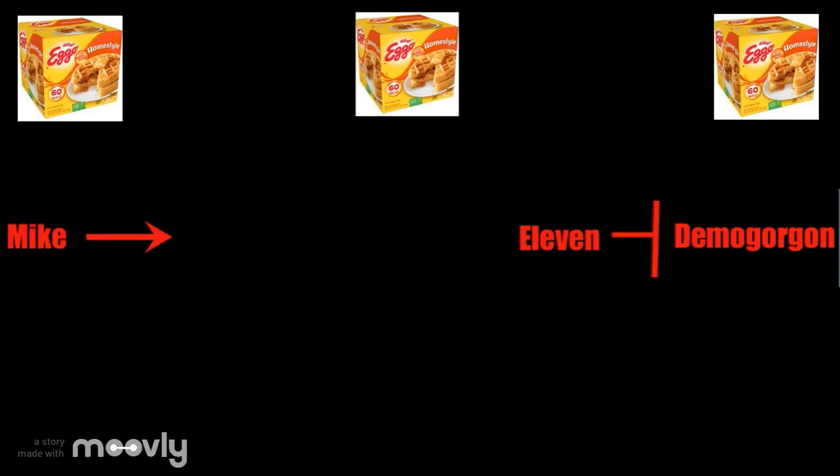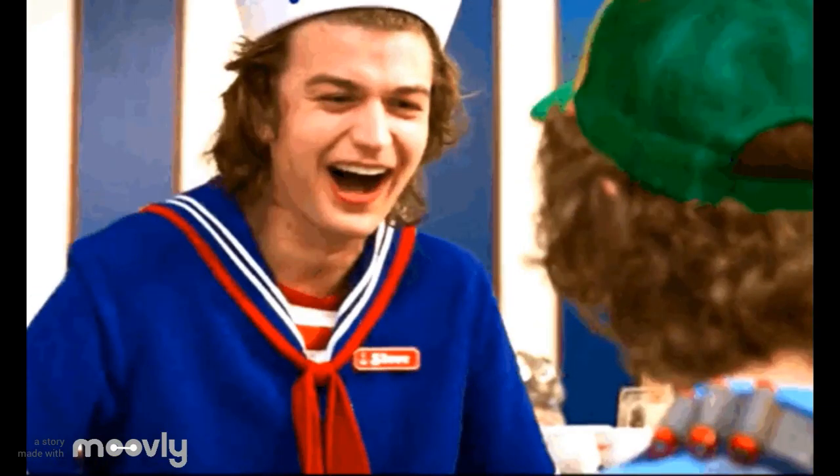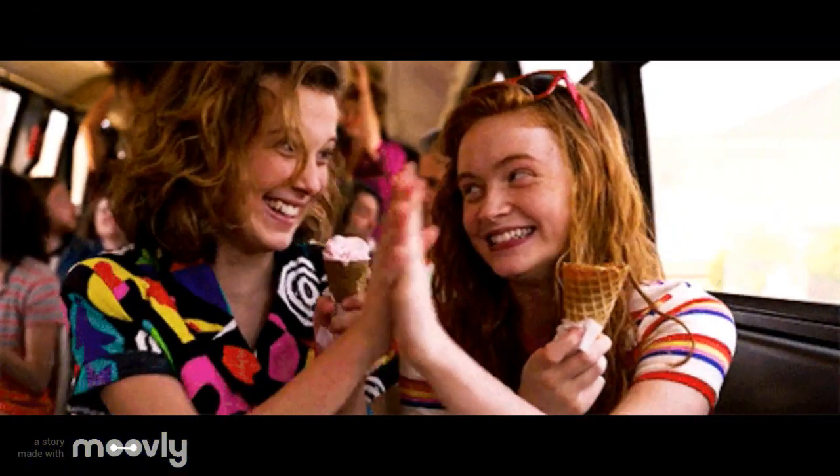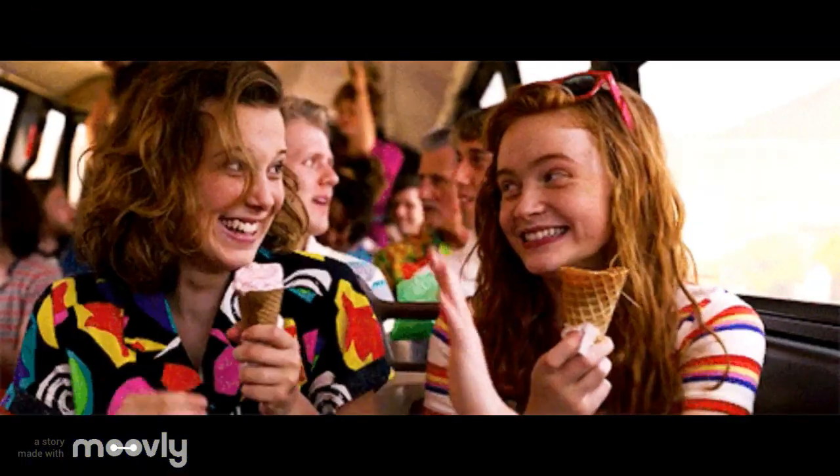If we get rid of Hopper and Billy, then 11 would defeat the demogorgon because Billy is not going to inhibit her. As you can see, the relationships within these developmental networks can be incredibly important.